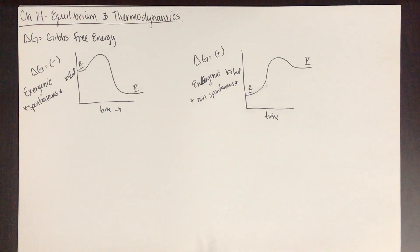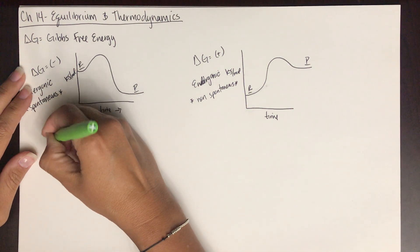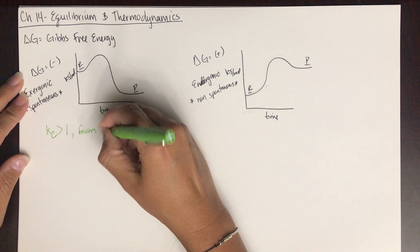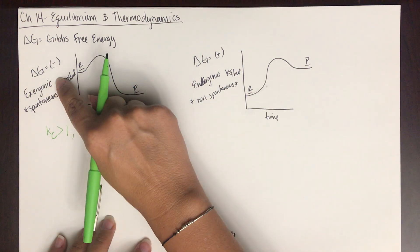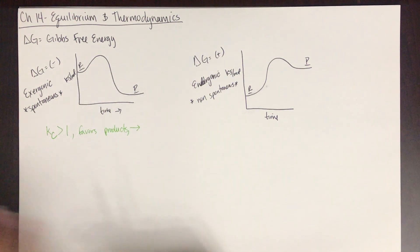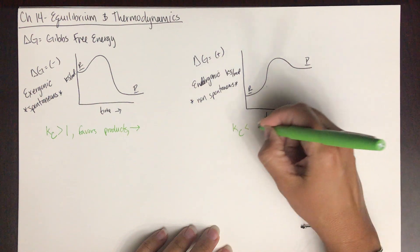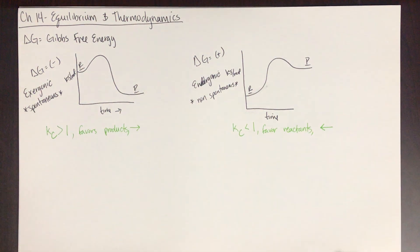Spontaneous reactions mean you do not need to put any energy in for the reaction to happen. Non-spontaneous reactions mean you do have to put energy in. Thinking about this in terms of equilibrium, if the KC is greater than 1, that means it favors the products — the reaction proceeds forward. Exergonic, spontaneous reactions favor the products and have a KC greater than 1. Endergonic, non-spontaneous reactions have a KC less than 1, meaning they favor the reactants and the reaction won't proceed on its own.